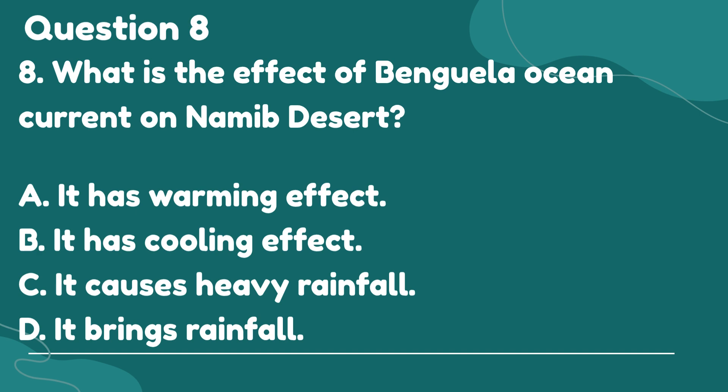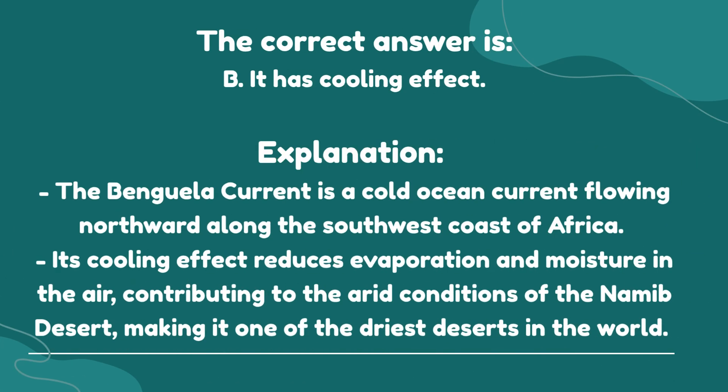The correct answer is B. It has a cooling effect. Explanation: The Benguela current is a cold ocean current flowing northward along the southwest coast of Africa. Its cooling effect reduces evaporation and moisture in the air, contributing to the arid conditions of the Namib Desert, making it one of the driest deserts in the world.